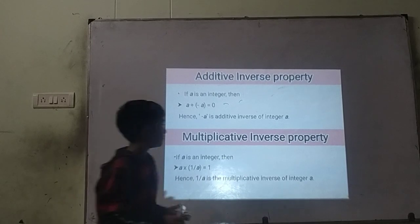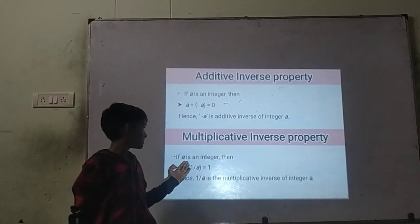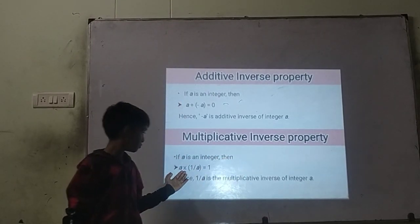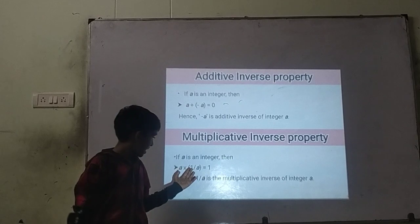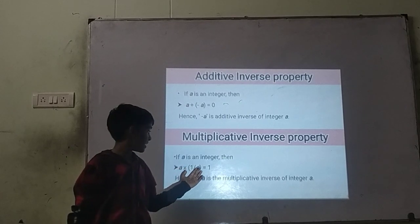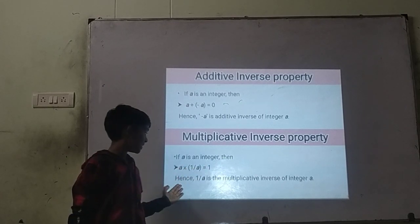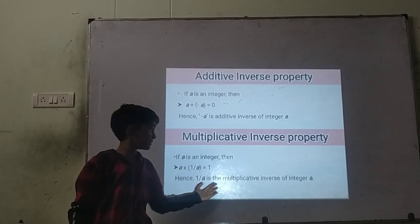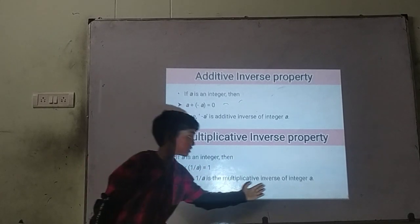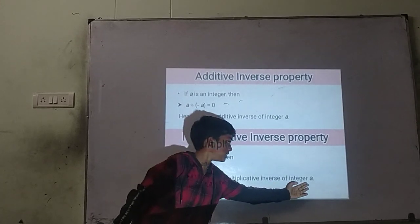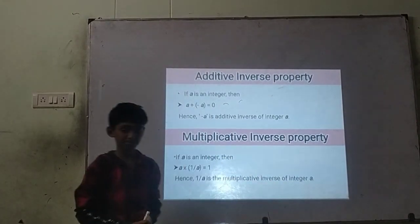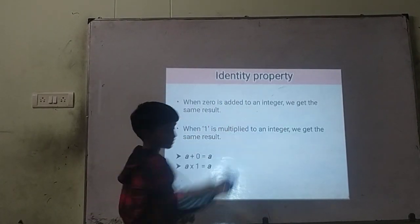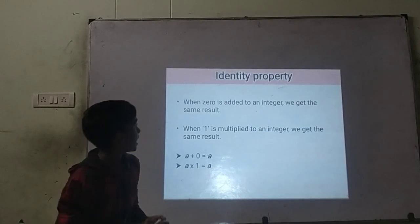Multiplicative inverse property. If A is an integer, then A into bracket 1 by A is equal to 1. Hence, 1 by A is the multiplicative inverse of A.